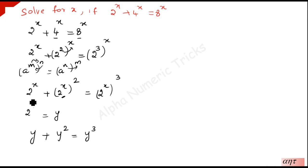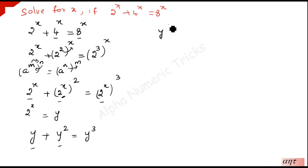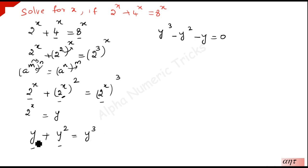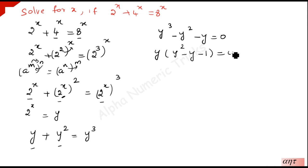Here you cannot divide by 2 to the power x, because you may miss one solution. So we rearrange by taking these two terms to the other side, giving: y cubed minus y squared minus y is equal to 0. Here y is common, so we factor it out to get: y times (y squared minus y minus 1) equals 0.